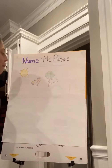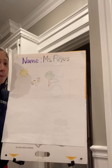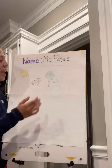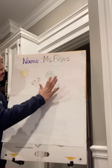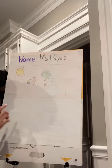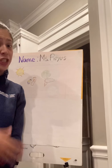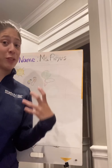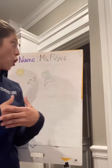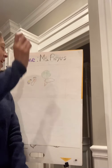Ms. Reyes drew two friends outside playing. And here's the sun, because that's where they get their shadow from. They see their shadow, and there's a tree, and the tree also has a shadow. And you can see my shadow right here too. Did Ms. Reyes draw a picture about something that relates to shadows? Yes, because shadows come from a light source. The light source is the sun, and we're outside, and we can see our shadows outside.